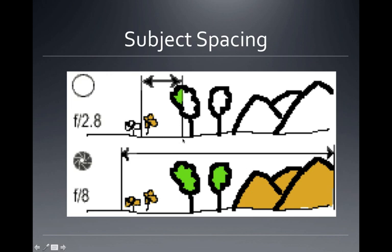Another thing you can do is control the spacing of your subject. On a digital camera, everything may be in focus from way back to the foreground. But if you can get your background beyond the depth of field range, it can be blurred. Here's your depth of field, there's your flower — if you want the background blurry, just move so the background is outside the depth of field. If your background is very far from your subject, it's easier to get it outside your depth of field.